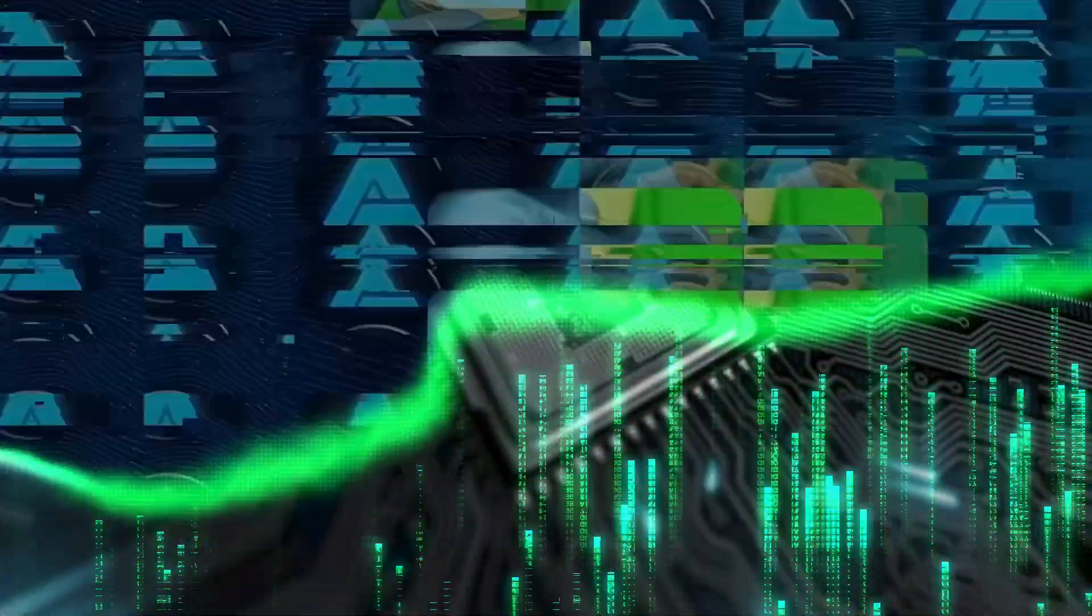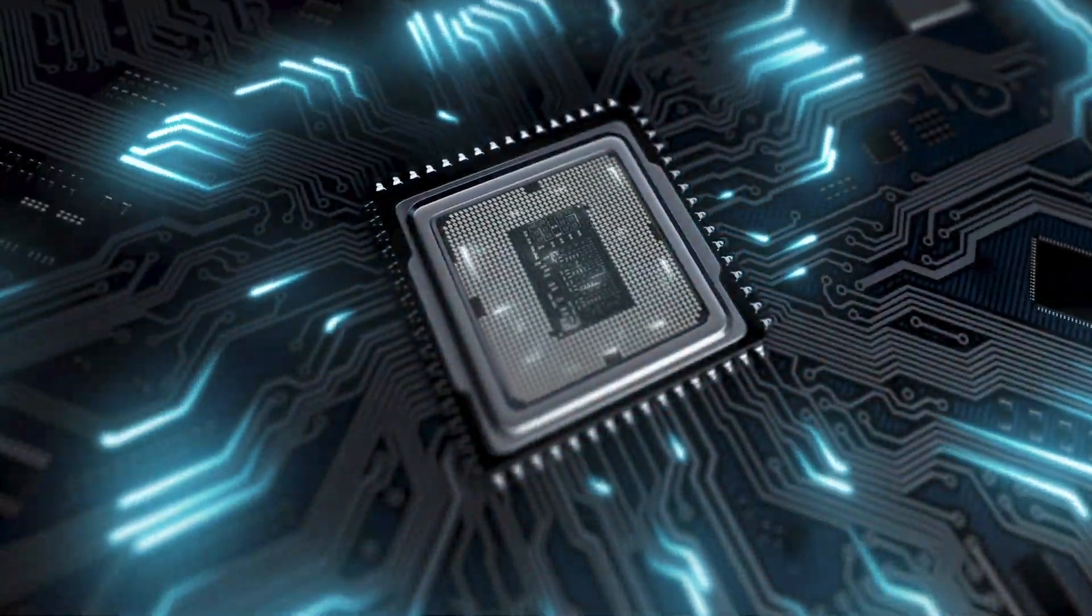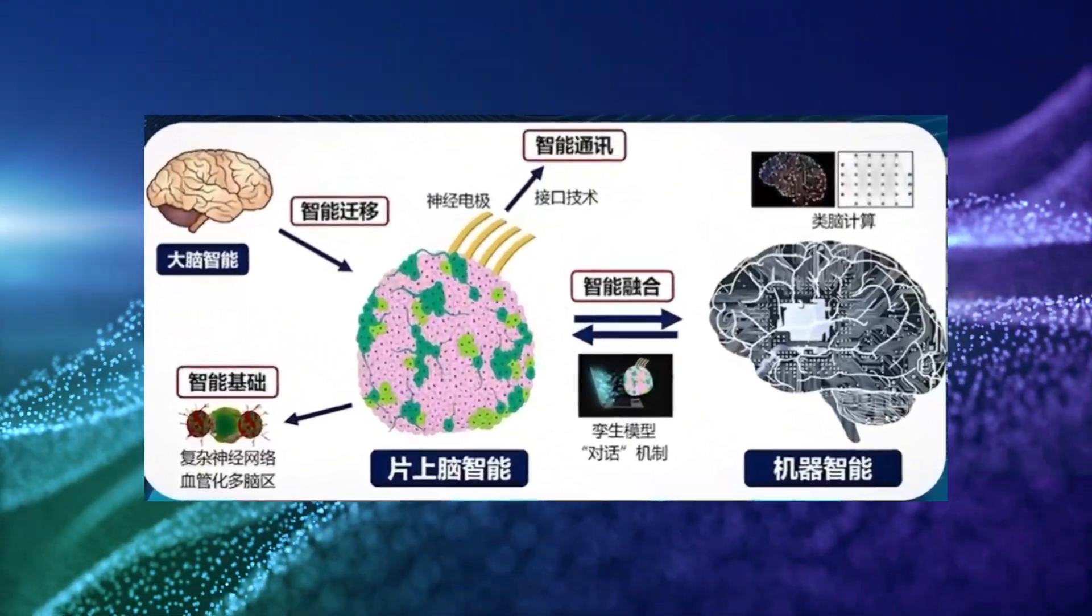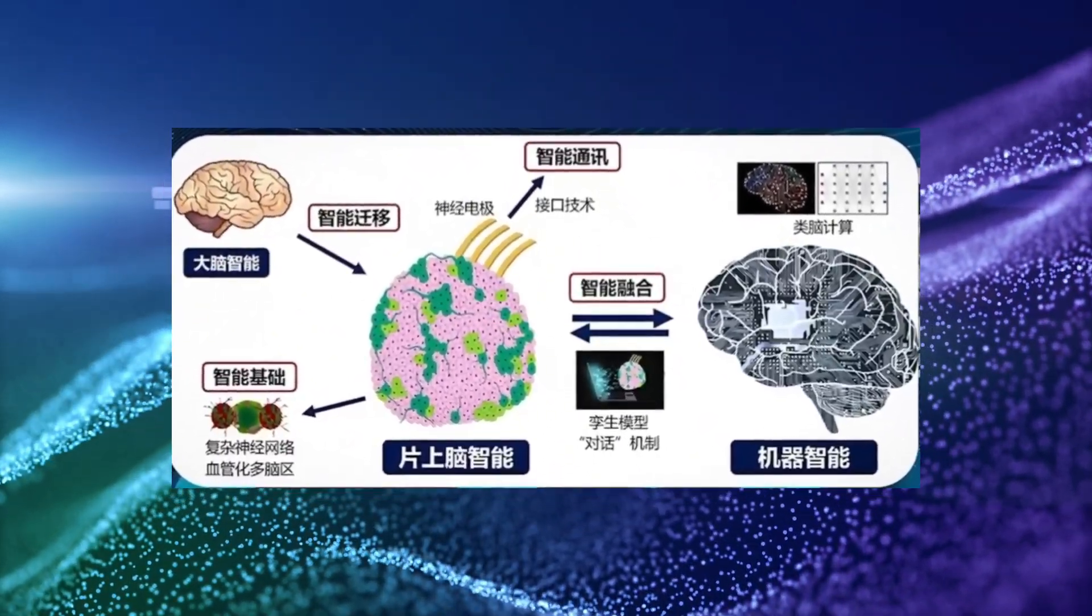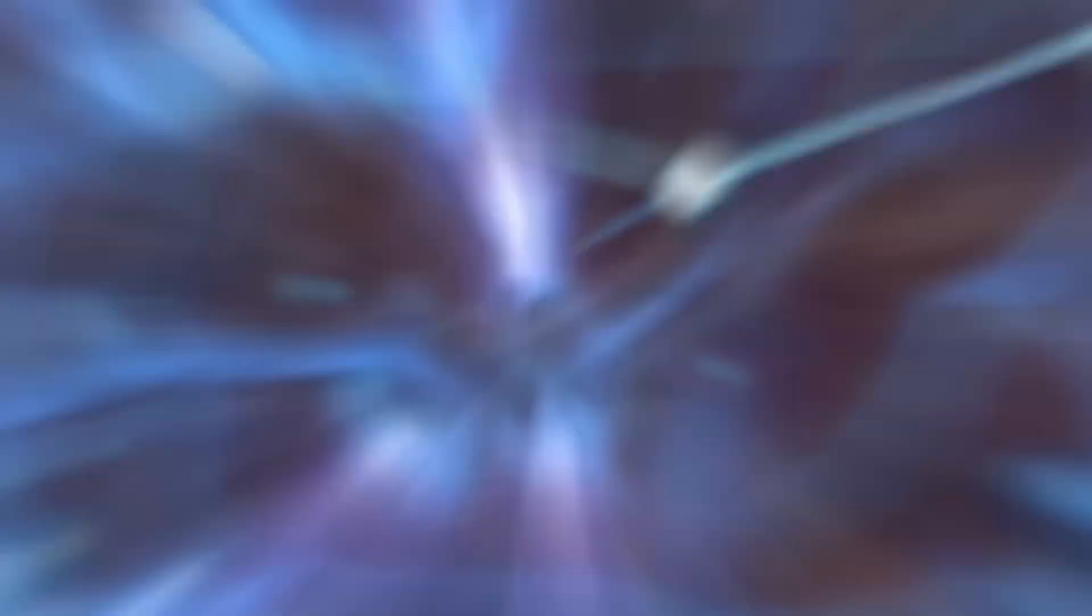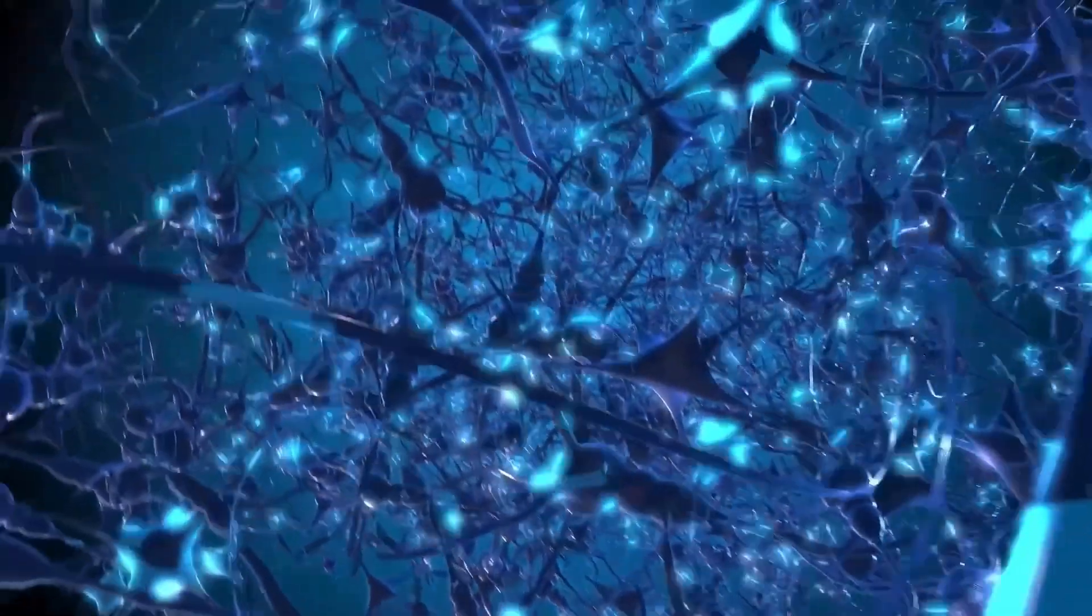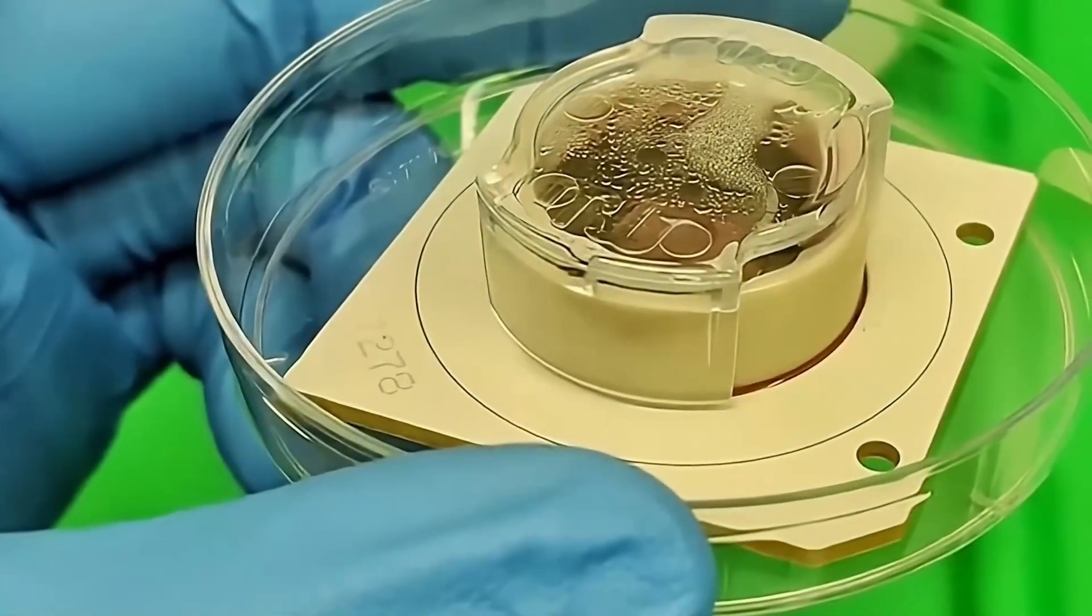Instead of relying on the same old computer circuits, these researchers have grown tiny brain cells in a lab. Yup, real brain cells. And they've carefully placed them onto a microchip. It's like they've transplanted the very essence of human thought into a machine. And that's kick-starting an entirely new era of smart machines.